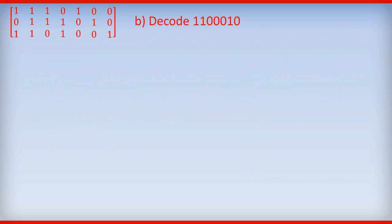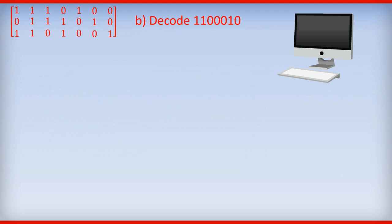Okay, on to part B. Decode 1, 1, 0, 0, 0, 1, 0. You might like to think that you're at home on your computer and a message comes in 1, 1, 0, 0, 0, 1, 0. And you want to work out whether there is an error in the data that's been sent to you.